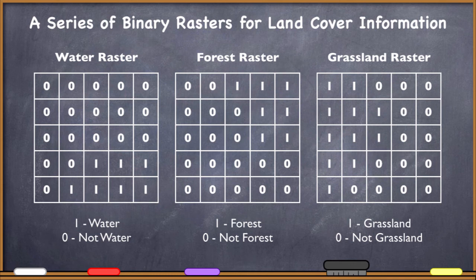Here is a series of binary rasters for land cover information. Maybe these rasters represent the same area, but here I'm interested in more land cover information than just where's the water. I've got water in this area, I've got forest in this area, and I've got grassland in this area. So I have three different binary rasters: one that's showing water, one that's showing forest, and one that's showing grassland. And then I can use these in my analysis and do whatever kind of mathematical manipulation I'm going to want to do with them.